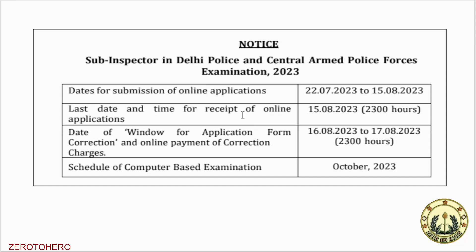It is important to see the dates. This is the CPU Sub-Inspector of Delhi Police and Central Armed Police Forces. The date for the online application is 22nd July to 5th August. We can apply during this window. If you have made a mistake or need a correction, you have two days to do so.